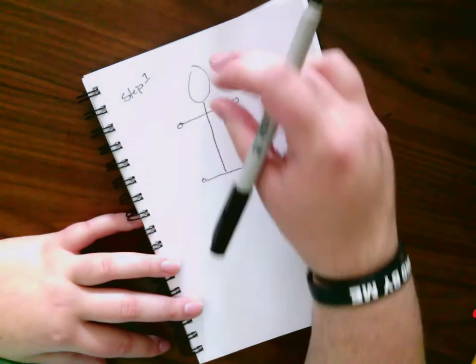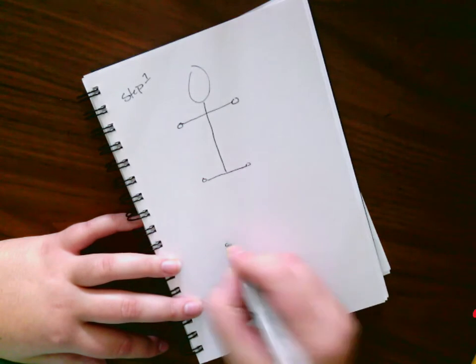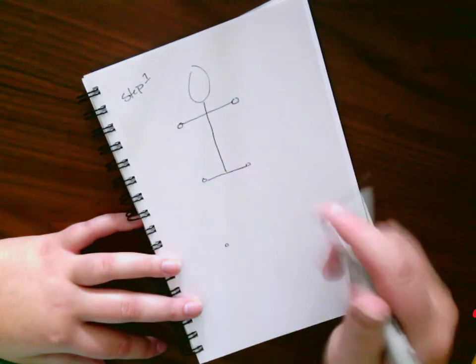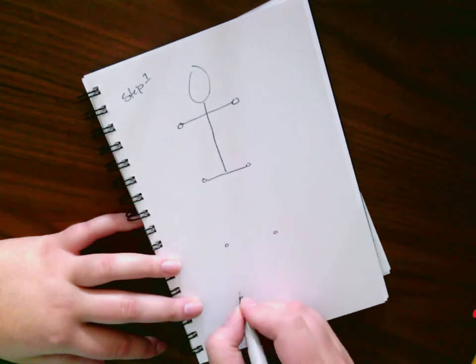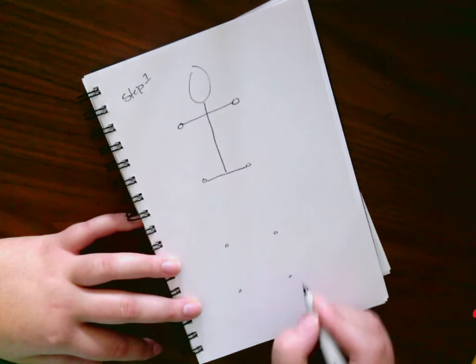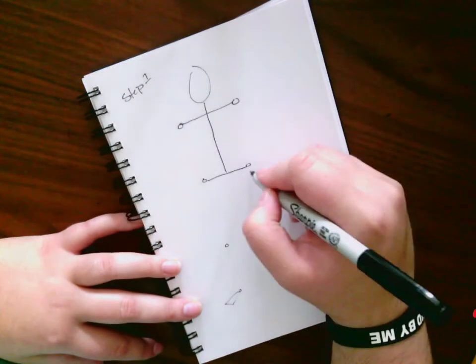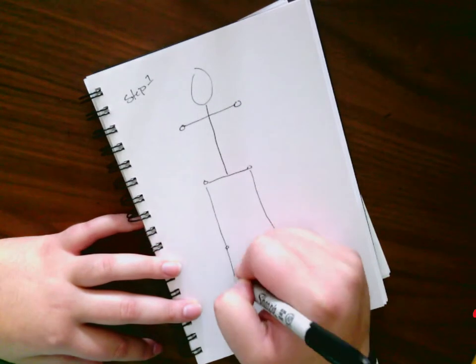Okay, so now I'm going to draw my legs. Your legs, the top of your legs, are two heads tall. Bottom leg is one and a half heads tall. I can actually just draw this one over here. And then remember, feet are triangles. Connect your dots.